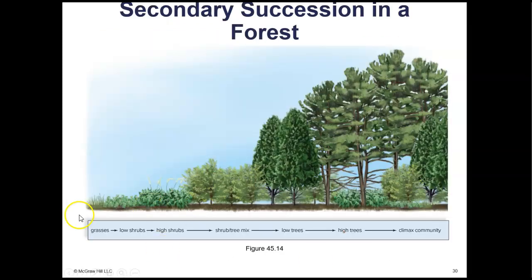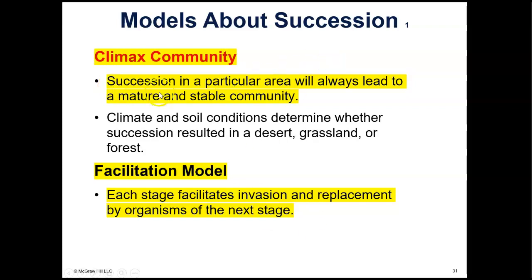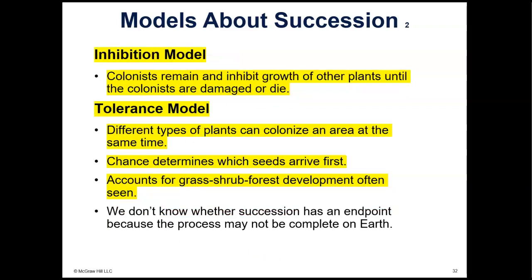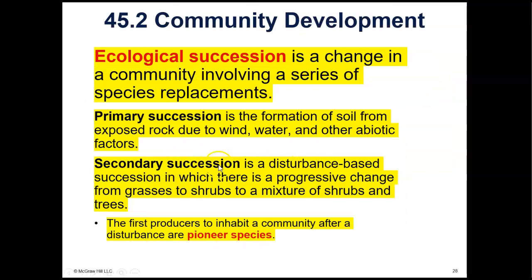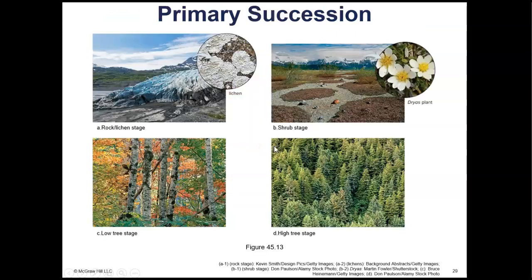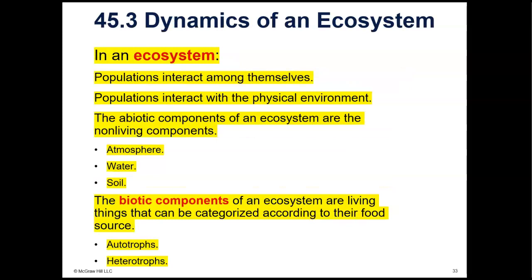In secondary succession, you don't start out with bare rock — you start out with grasses, then low shrubs, taller shrubs, a mixture of trees and shrubs, low trees, high trees, and then your climax community, which is just a forest community. The climax community is the mature and stable community that occurs after many years of succession. The facilitation model of succession says that each stage facilitates invasion and replacement by organisms of the next stage. The main thing is to know the difference between primary and secondary succession, as those are the examples used in quiz and exam questions.